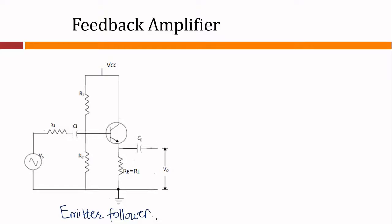The common collector or emitter follower is an example of voltage series feedback, since the voltage developed at the output is in series with the input voltage as far as the base-emitter junction is concerned. The output is taken from the emitter, and the signal drops across the emitter resistor. This output voltage also acts as a feedback voltage with respect to the base-emitter junction.